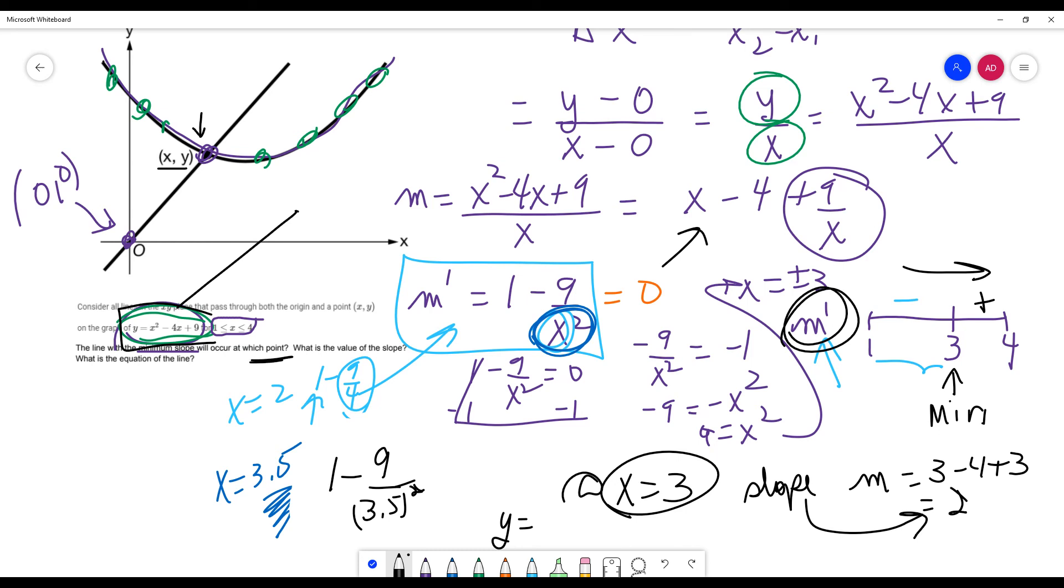So I could throw it in 3 squared minus 4 times 3 plus 9, then you'll end up getting, I think, I think it's 6. So check that out, the first question said the point at which the minimum slope will occur, that's the point 3, 6. The next question said find the value of the slope, we just said the slope was 2.